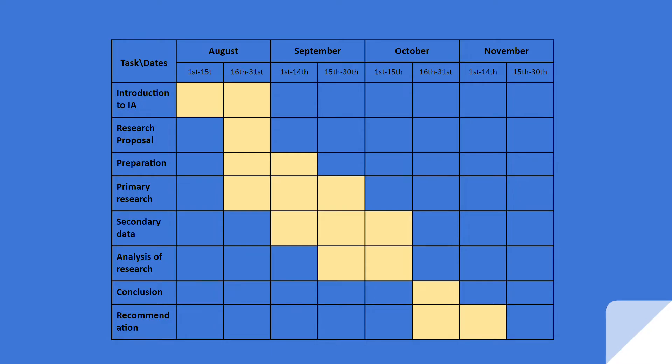So now I'll show you an example, the example for my IA actually in business. So you'll see the time scale here in the first row and then all the different tasks in the first column here. And then you'll see the dates. I did it with, I believe, 15 days.